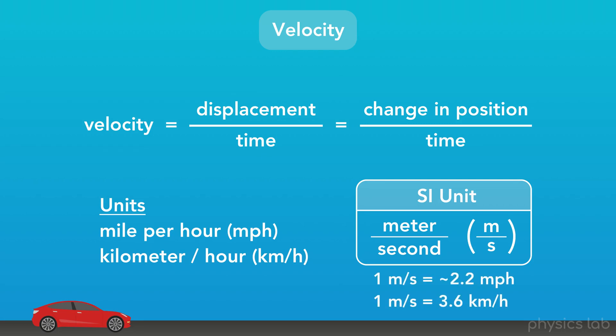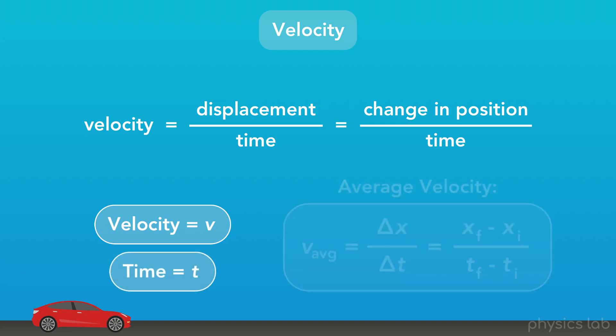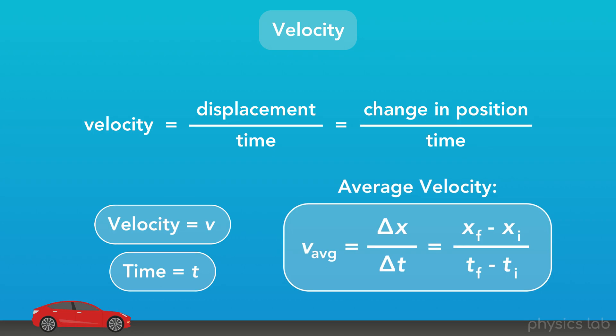For reference, 1 meter per second is roughly 2.2 miles per hour, or 3.6 kilometers per hour. We represent velocity using the variable v, and we represent time using the variable t. Here's our equation for the average velocity of an object: average velocity equals displacement over time, or we could write out each of the variables separately.